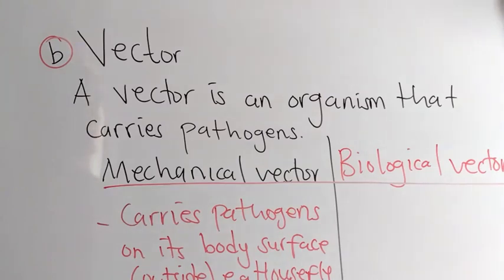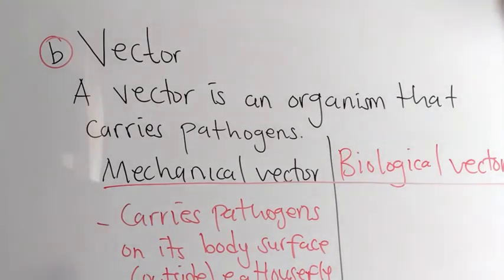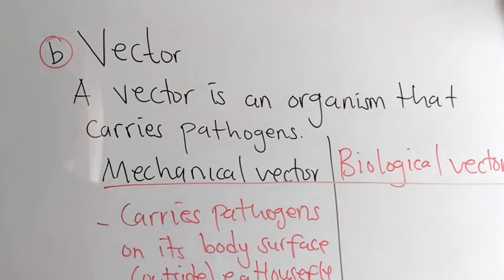That is why you will see that a housefly, when it comes from latrines or from contaminated water and then comes into your home, it stays on food and will leave the pathogens on that food. If you eat food that is contaminated by the housefly, you may get the pathogens and then you become infected. So that is what a mechanical vector is.